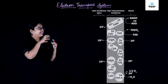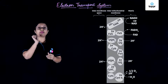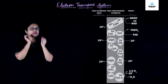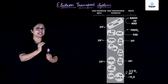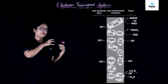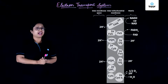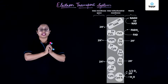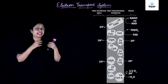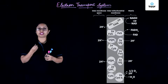The electron is then transferred from ubiquinol to cytochrome C via cytochrome BC1, which makes Complex III. Cytochrome C is a small protein present at the outer side of the inner mitochondrial membrane, and it transfers the electron to Complex IV, which comprises cytochrome A and A3. From Complex IV, the electron finally goes to oxygen, which is the final electron acceptor, and the oxygen receives it and forms water. Thus, one molecule of water is formed in this whole process.